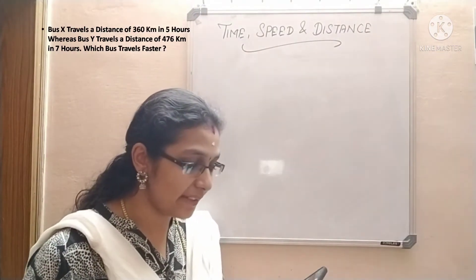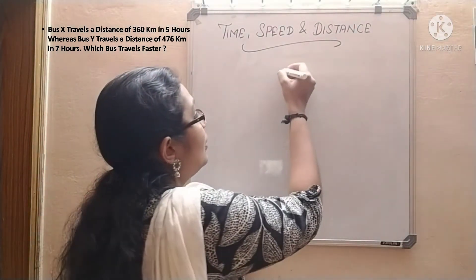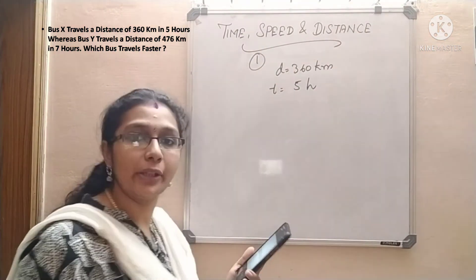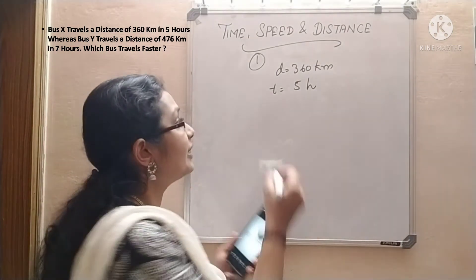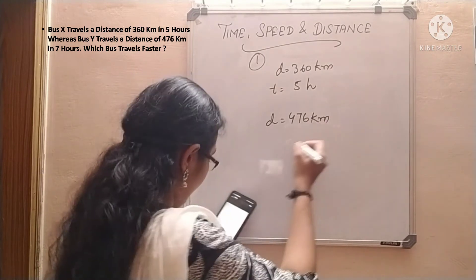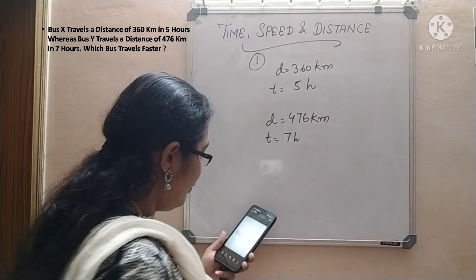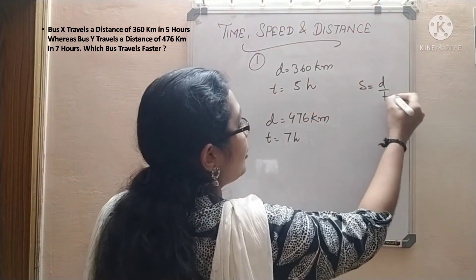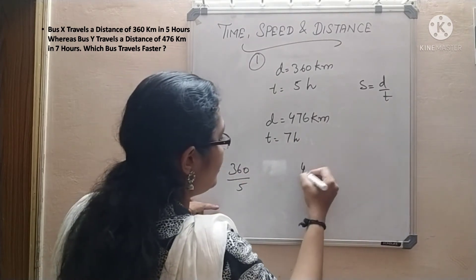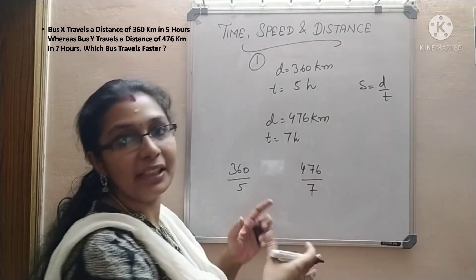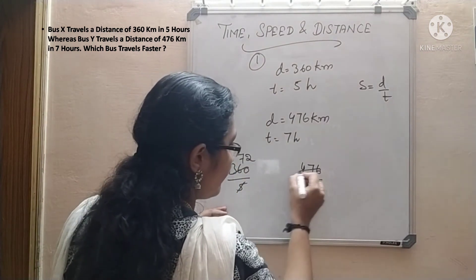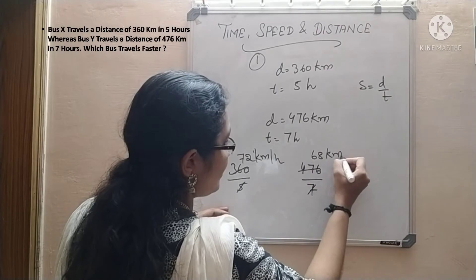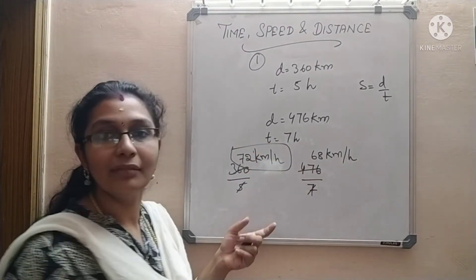Next question. Bus X travels a distance of 360 kilometers in 5 hours. Bus Y travels a distance of 476 kilometers in 7 hours. Which bus travels faster? Find the speed of both: Bus X speed = 360 / 5 = 72 km/h. Bus Y speed = 476 / 7 = 68 km/h. Since 72 is greater, Bus X travels faster.